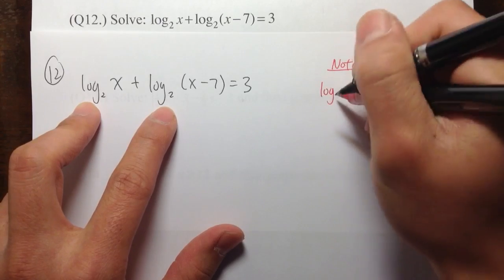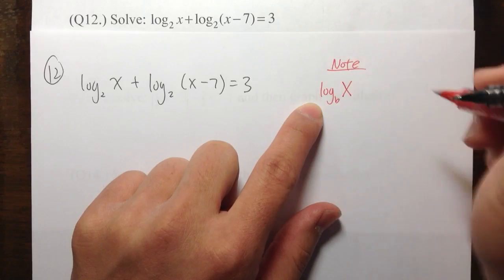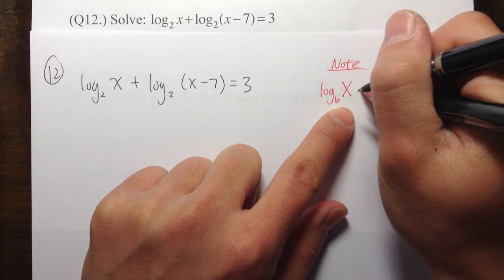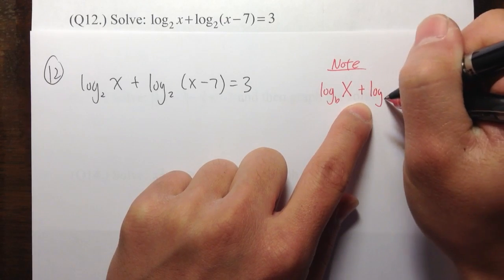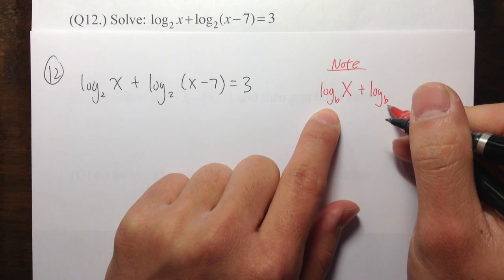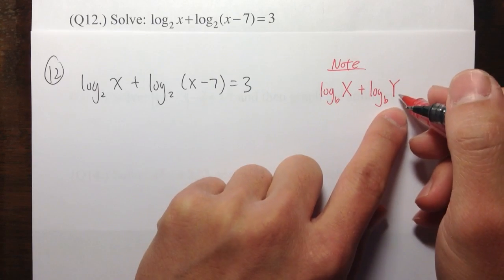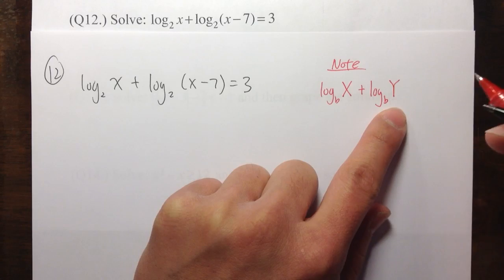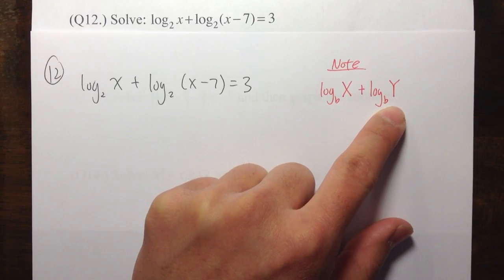So first property of log, what I've seen is log base b of some, let me just write it with a capital X. This capital X can be anything. If you have addition between another log base b, they are the same base of, let's say, a capital Y. Again, this capital Y just to represent anything. It can be an expression, or it may be a little y, or it can be like 5x plus 2, things like that.